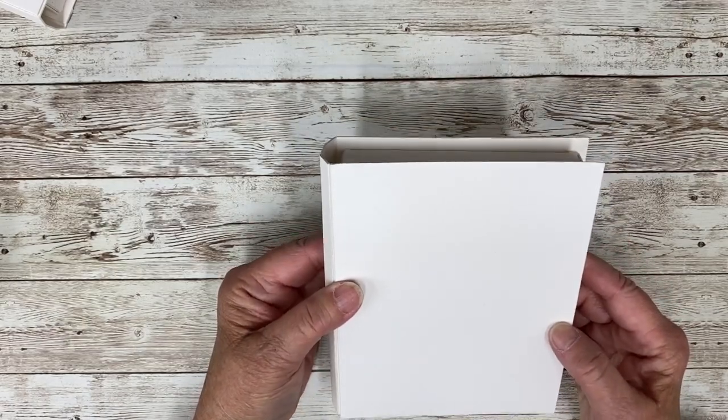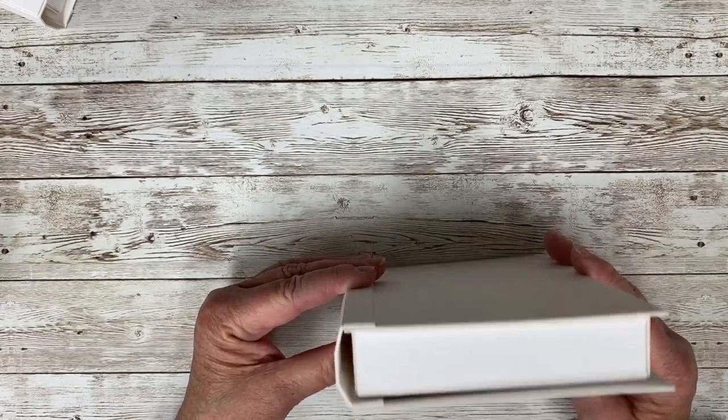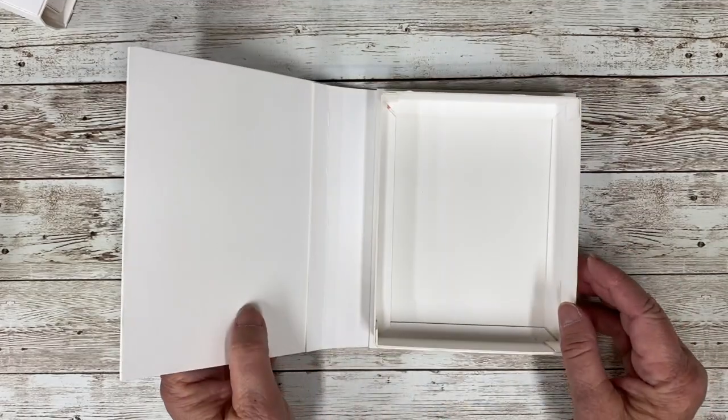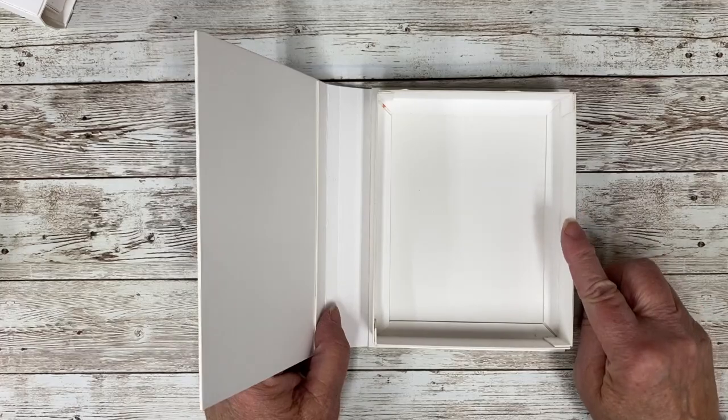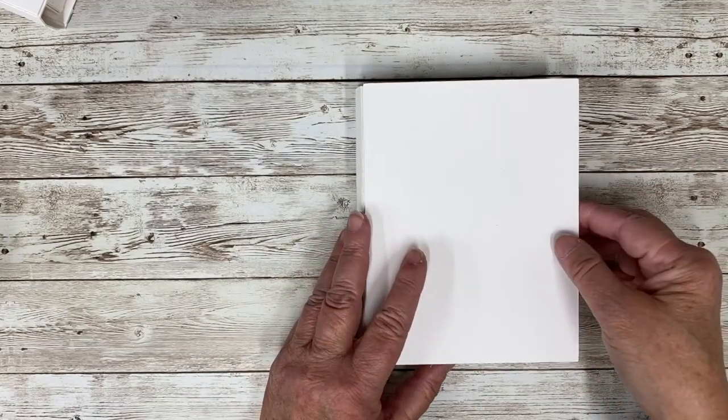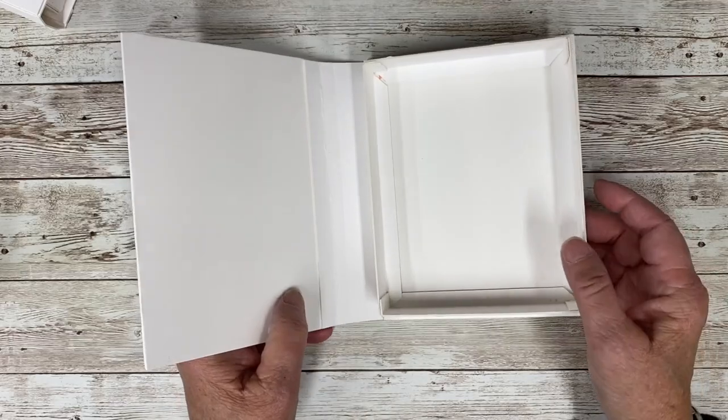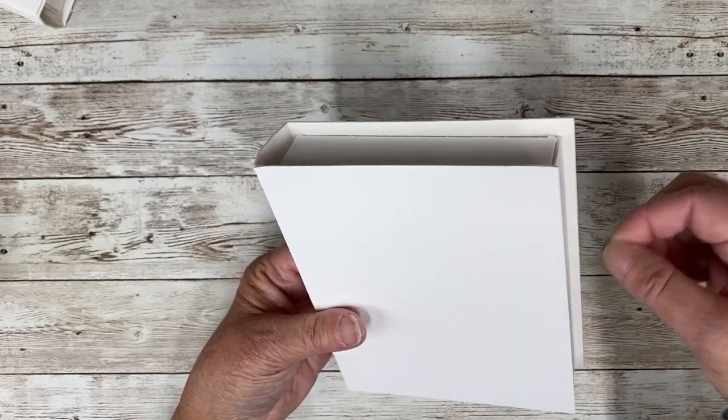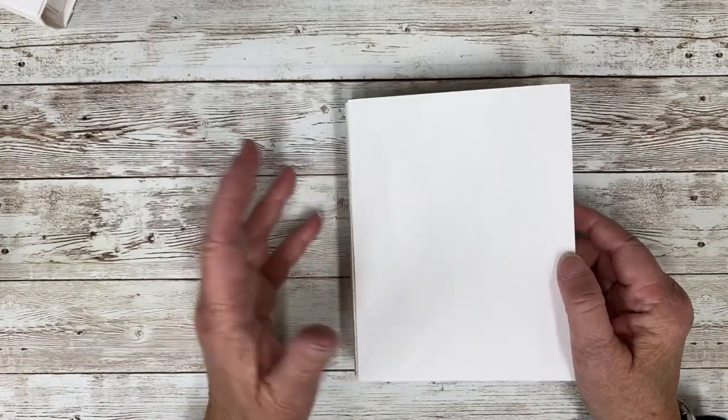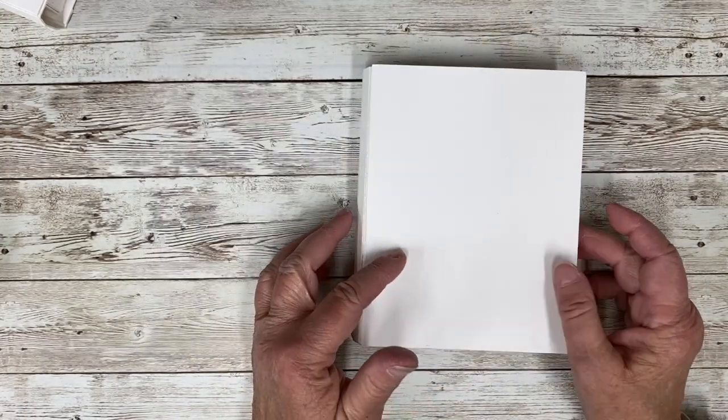And you can see that it went pretty quickly. I think it went together really nicely. You can add a closure, either like a piece of Velcro right here that you kind of wrap around and then have another piece here. You can use magnets to close it. You could punch a hole here, punch a hole here, tie a ribbon together. So, or you can just leave it plain without a closure.